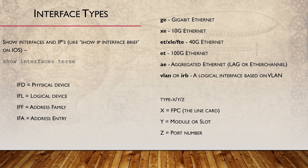The interface name has three numbers. The first is called the FPC, or Flexible PIC Concentrator — a fancy name for a line card. Some devices allow you to add more FPCs to get more ports. Next is the module or slot. If you have a fixed format switch, you might have some RJ45 ports and some SFP ports, which will use different module numbers. And finally, the third number is the port number.